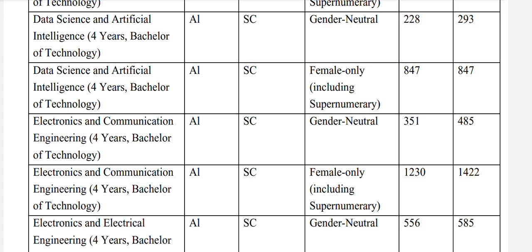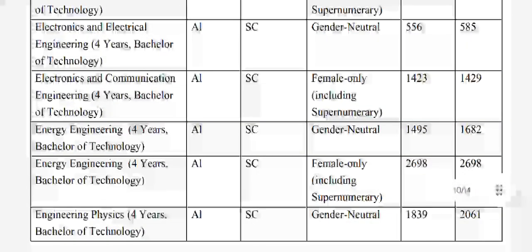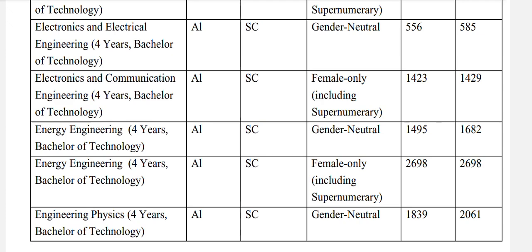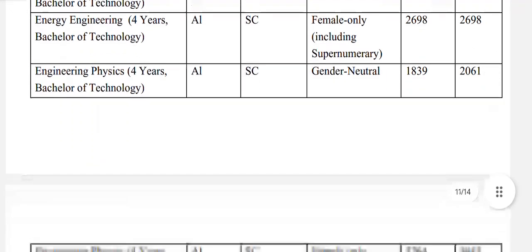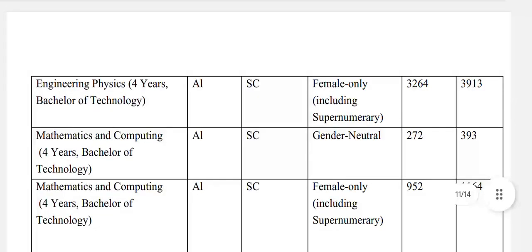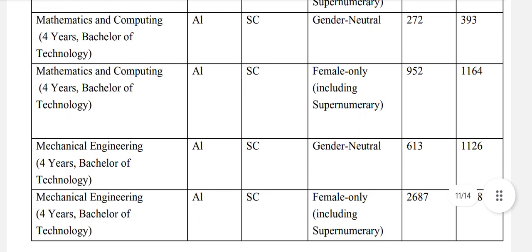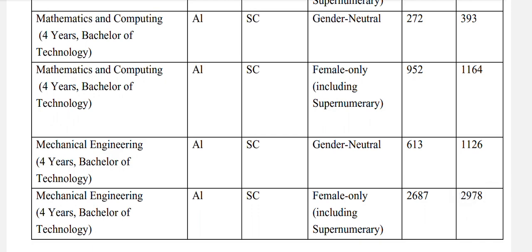Electronics and Communication Engineering, SC gender-neutral: 485. Electronics and Electrical Engineering, SC gender-neutral: 585. Energy Engineering, SC gender-neutral: 1682. Engineering Physics, SC gender-neutral: 2061, and for females: 13913. Mathematics and Computing, SC gender-neutral: 393, and SC female: 1164. Mechanical Engineering, SC gender-neutral: 1126, and SC female: 2978.